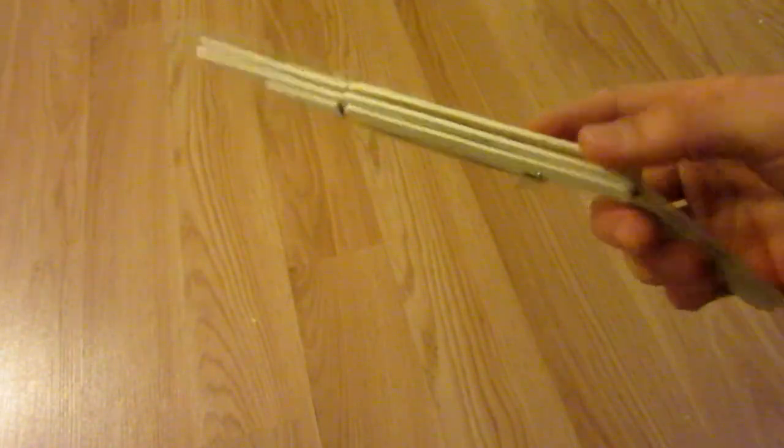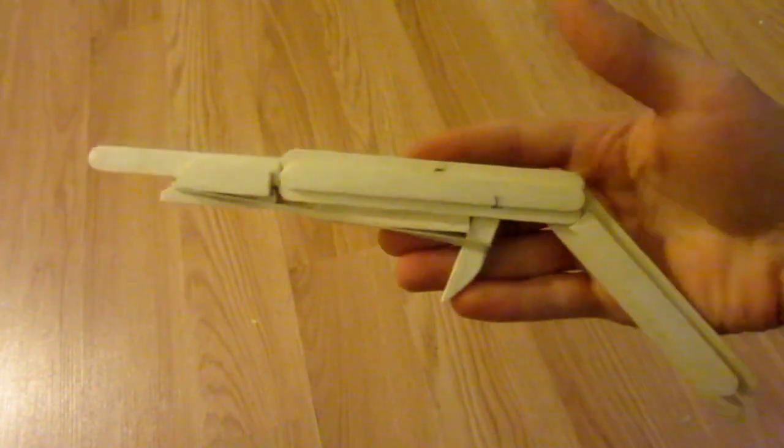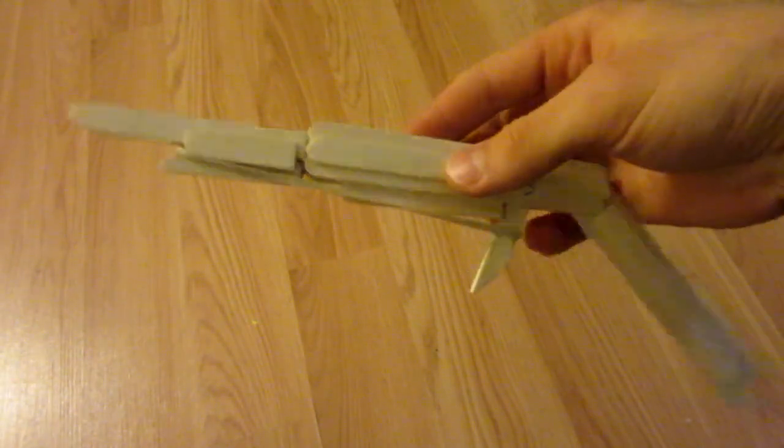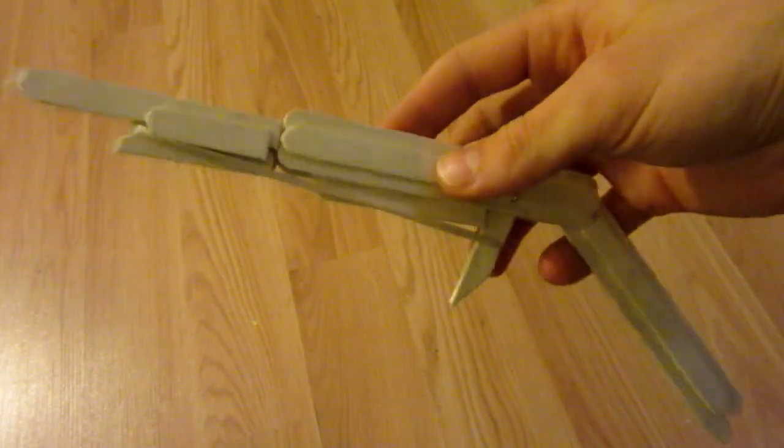Hello everyone, Inventor719 here, and in today's video I am going to be showing you guys how to make this very cool little wooden gun made purely out of popsicle sticks, some glue and rubber bands.